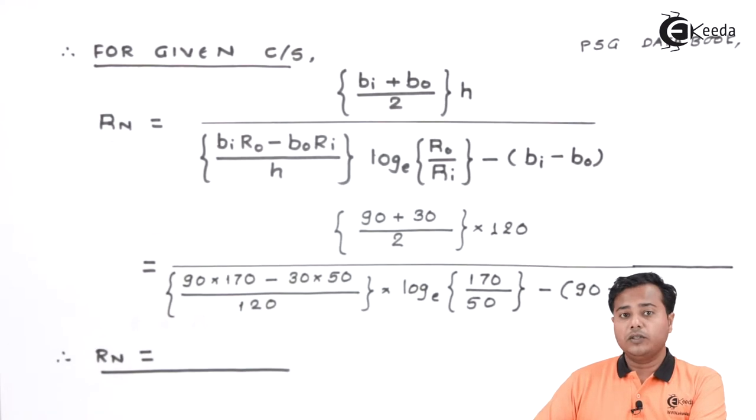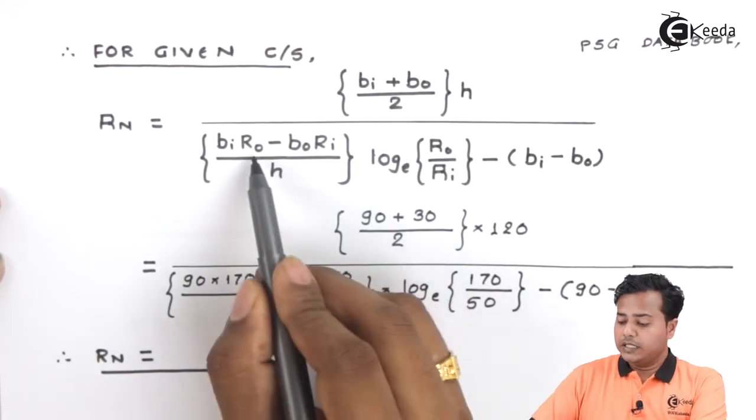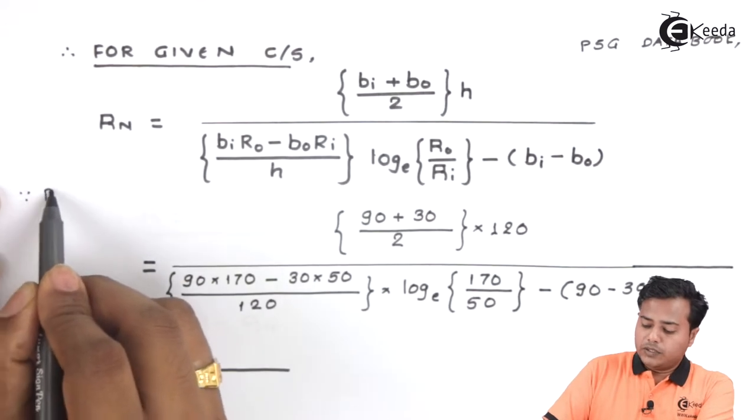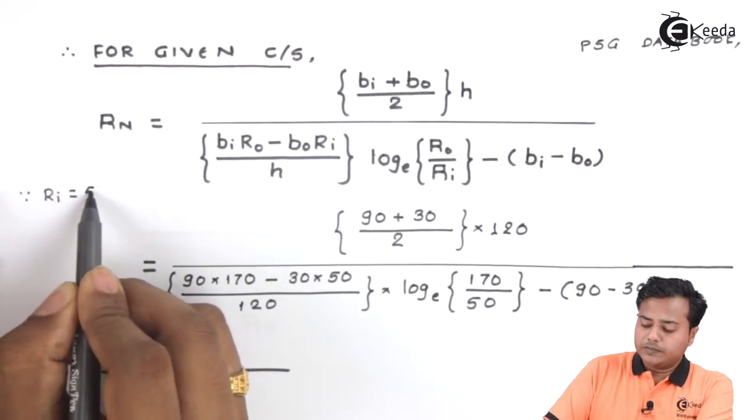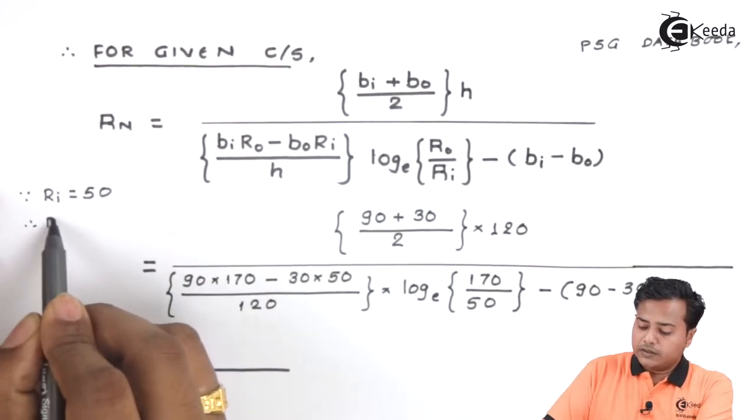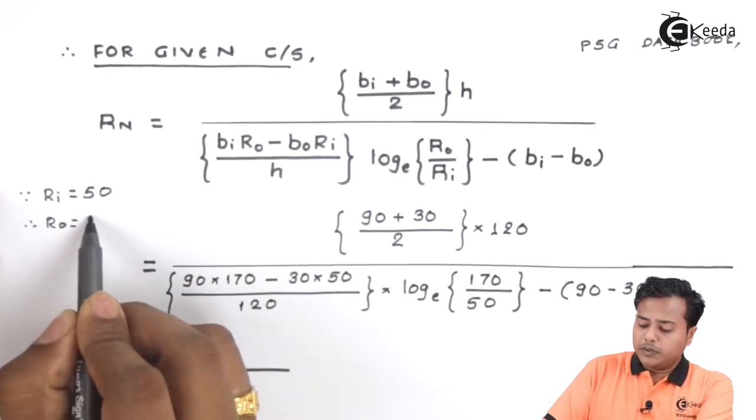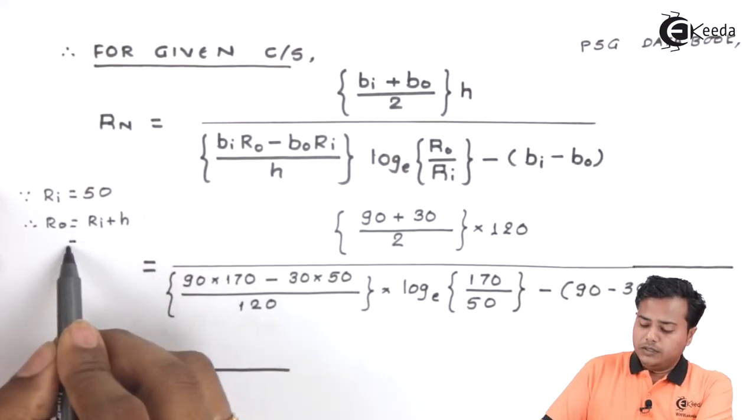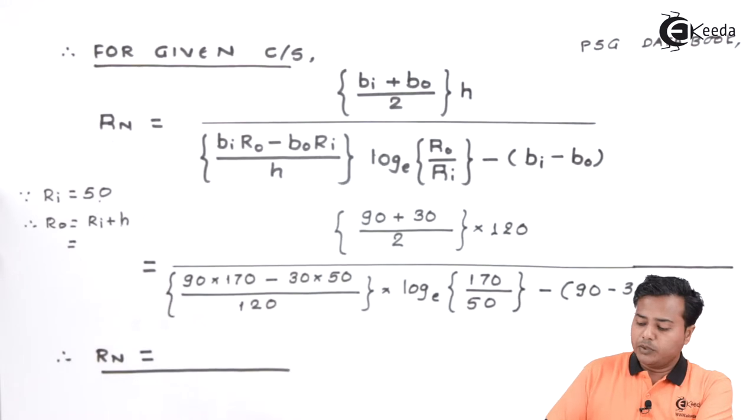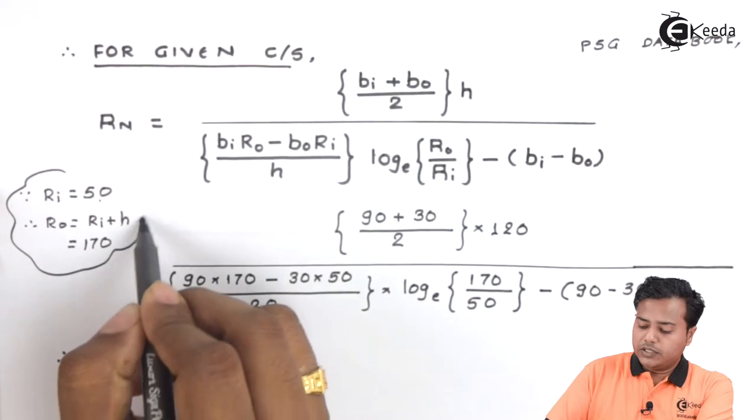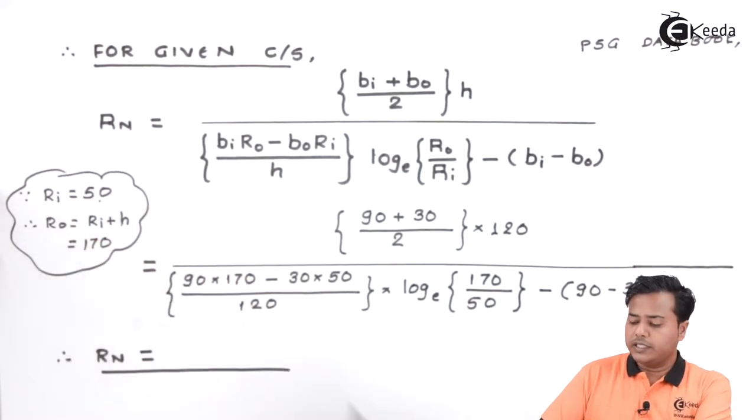Now, here one thing to be understand is the outer and the inner radius. We already know this, the inner radius is 50 and we know that the outer radius is nothing but the inner radius plus the h component. The inner radius being 50 and h component being 120, the answer becomes 170. So this is the additional thing that we need to understand here.